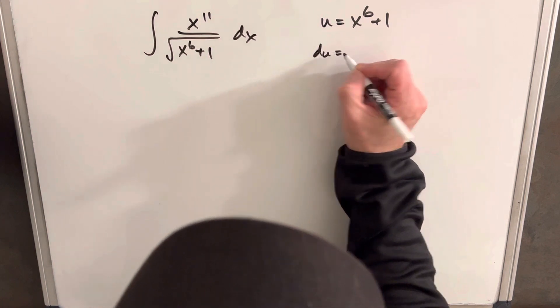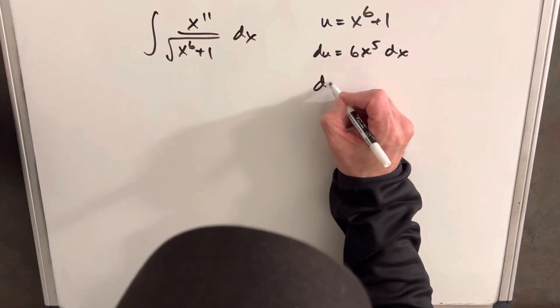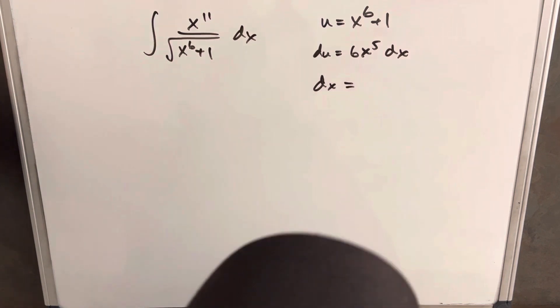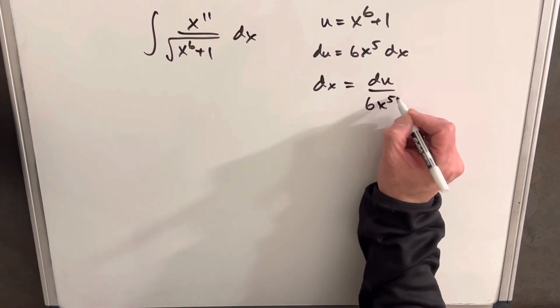Then taking our derivative du is going to be just 6x to the 5th dx, but we want to solve for dx so we can just substitute in directly. So dx is going to be du over 6x to the 5th.